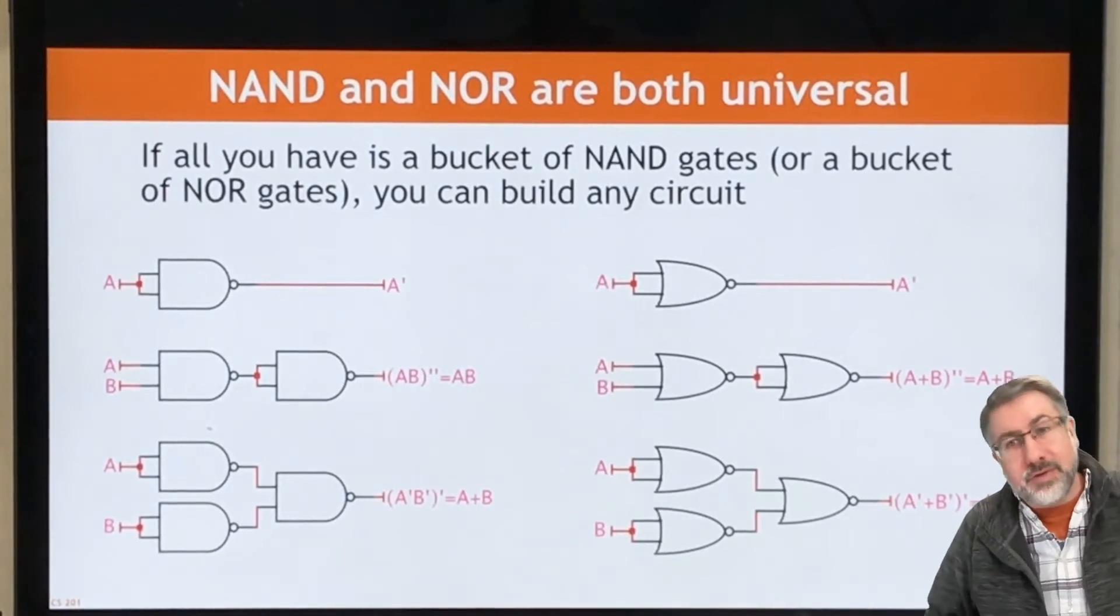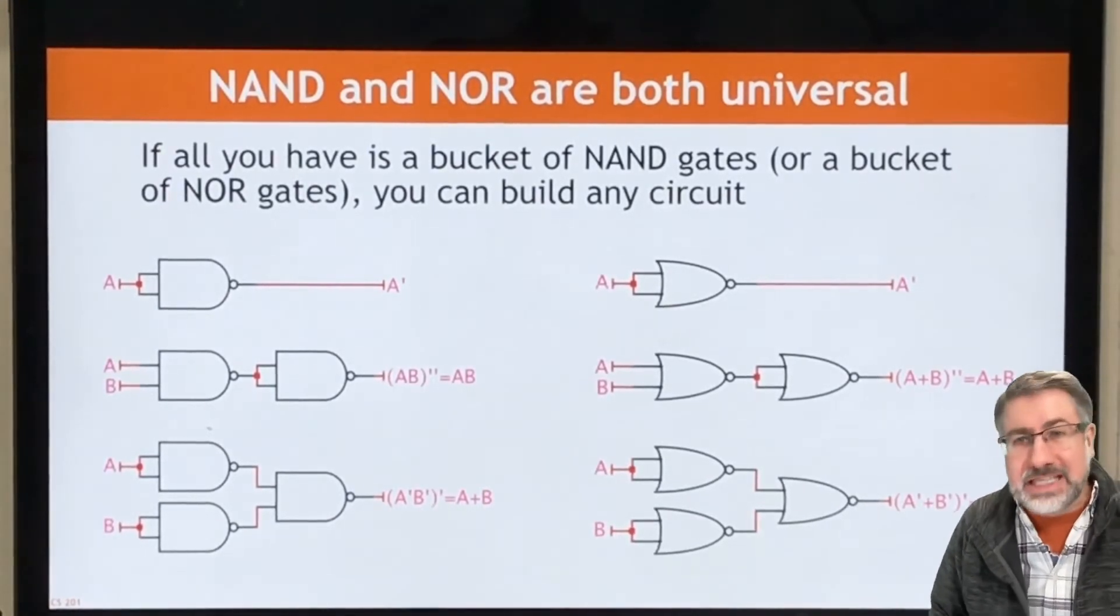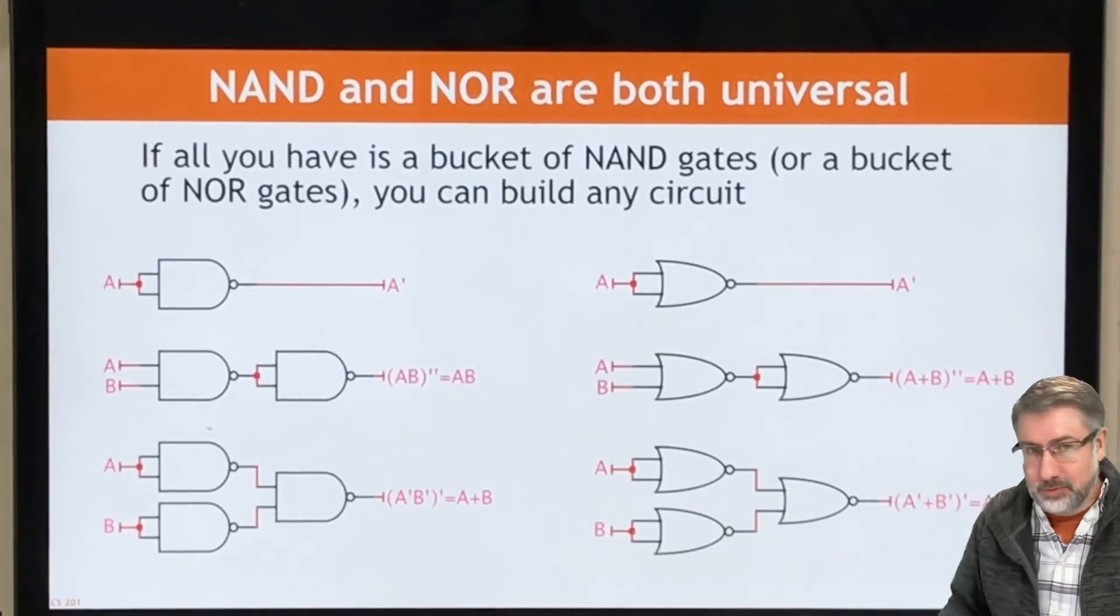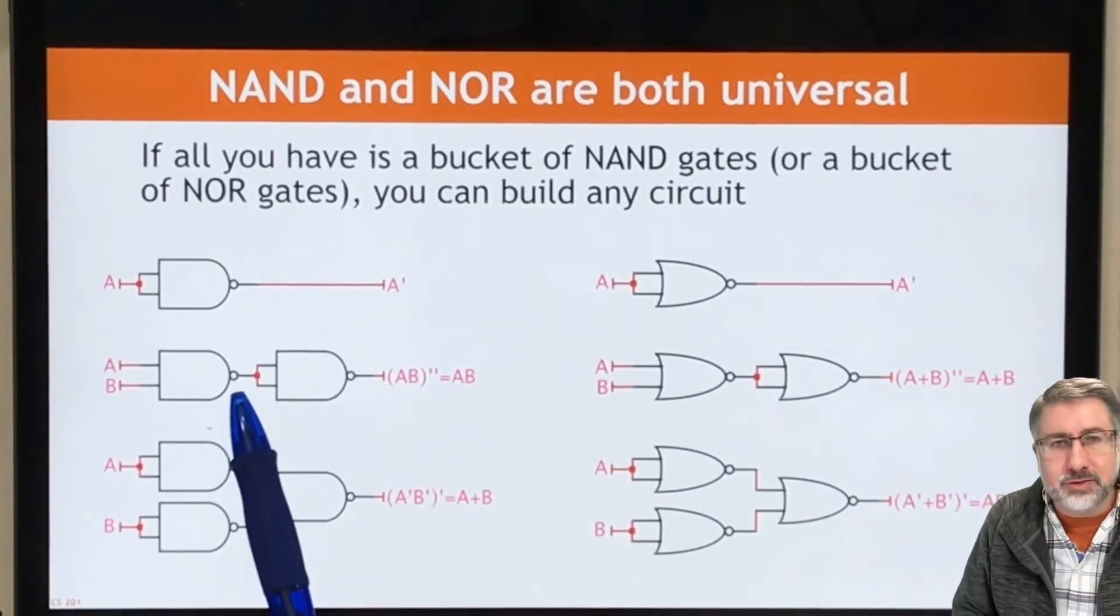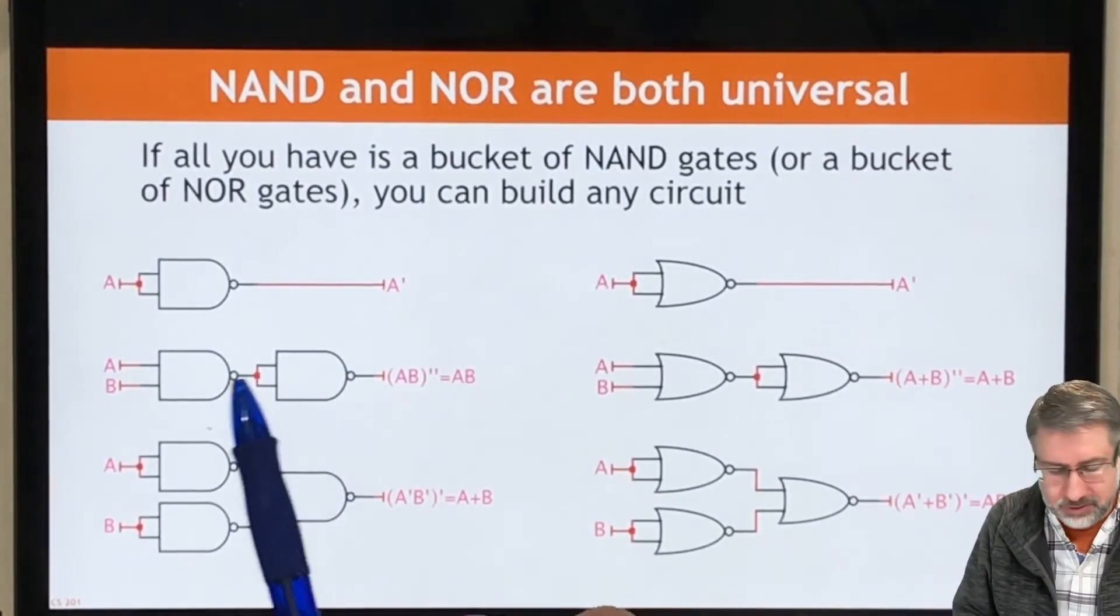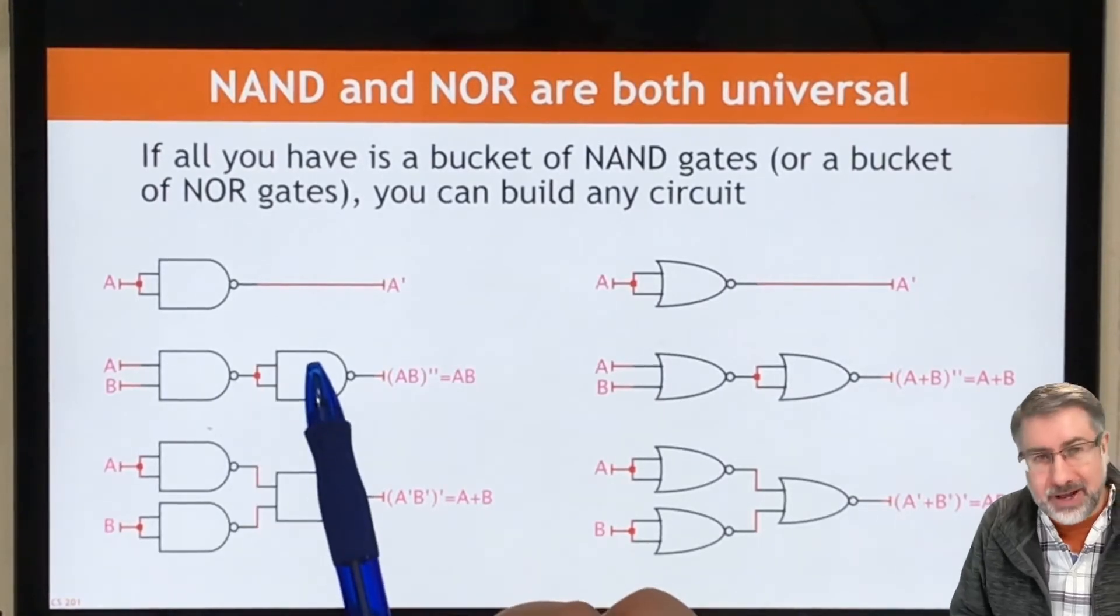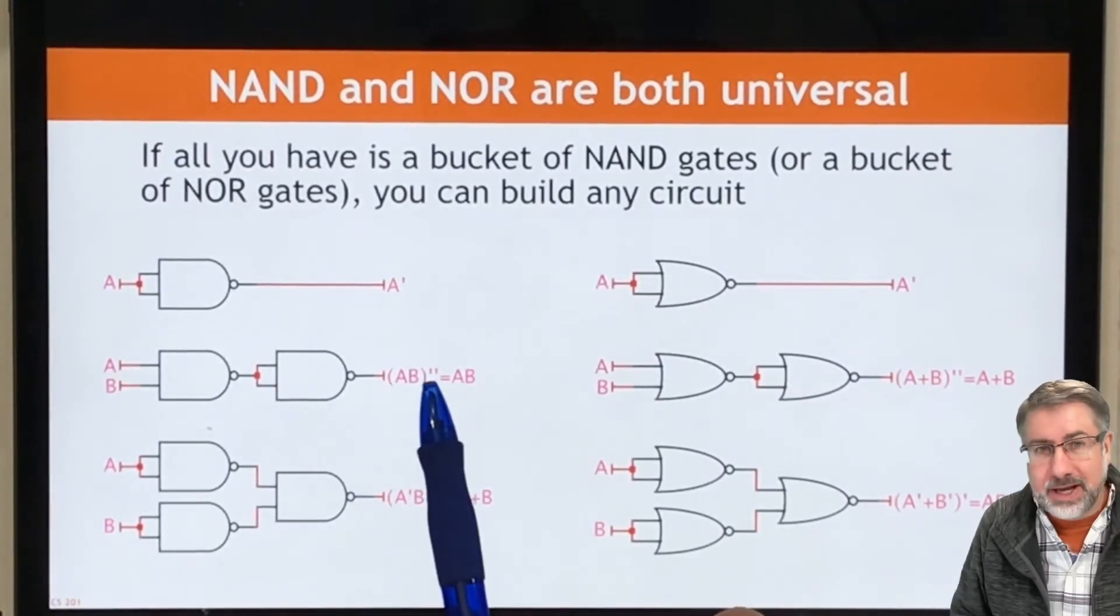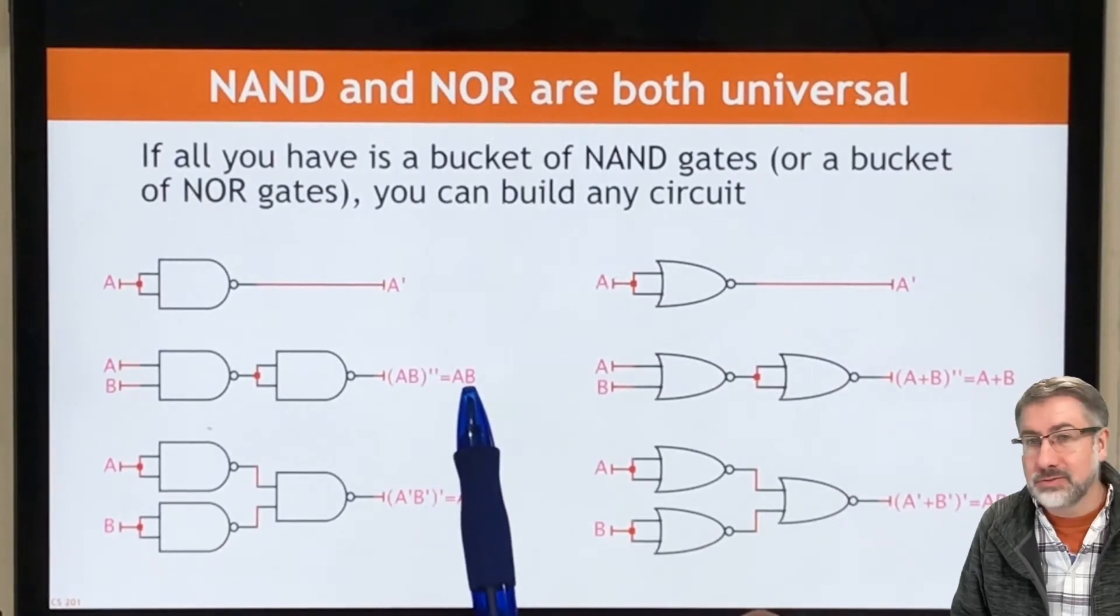Now that we've got an inverter, it's easy to make the other two gates. Trivially easy, in fact, because all we have to do to make an AND gate is undo this inverter by adding another inverter here. So NAND gate, and then another NAND gate with its inputs tied together, gives us NAND inverted, which is AND.